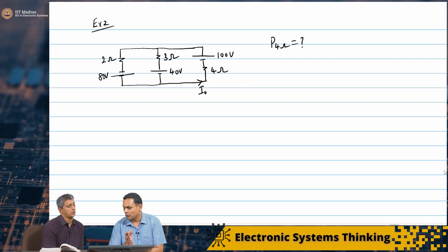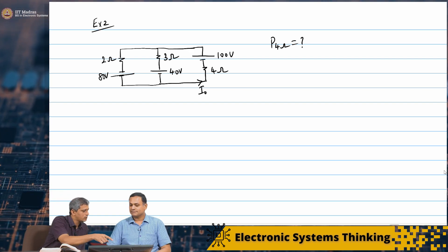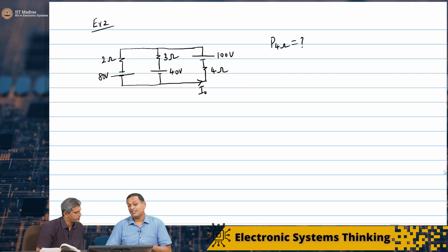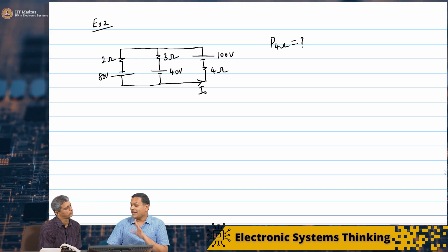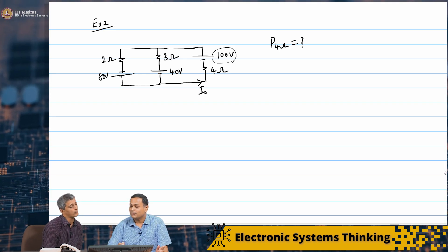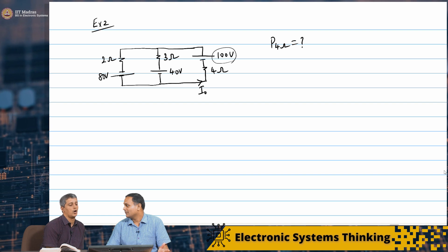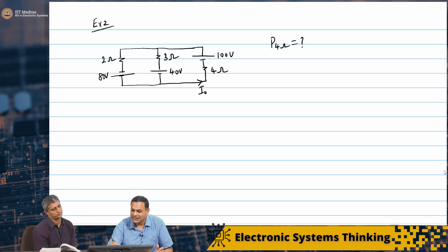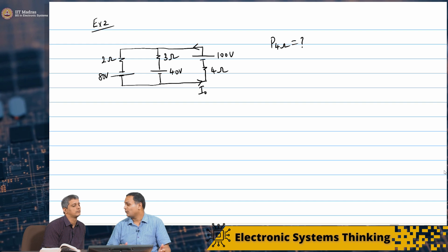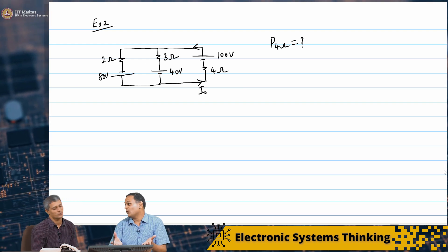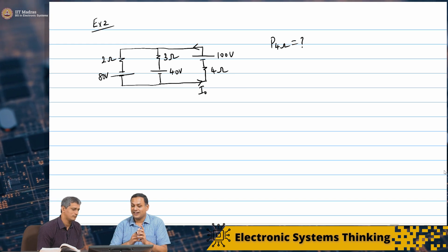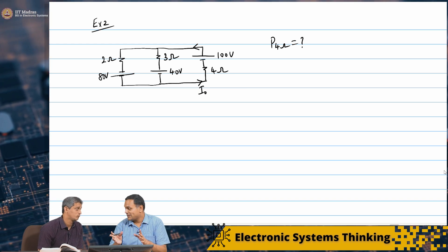First, let me apply the 80 volt source. Actually, is there any rationale for choosing that direction? My gut feeling is that the largest voltage source is most likely going to be delivering power. But it need not always be so, because smaller voltages can add up — as we saw in the last problem where a source was actually absorbing power.